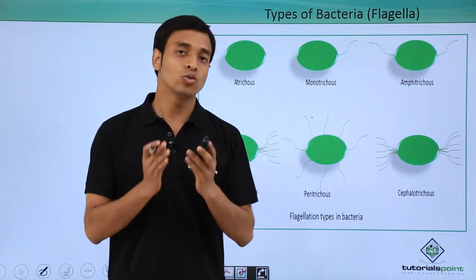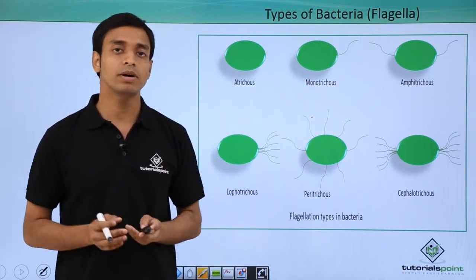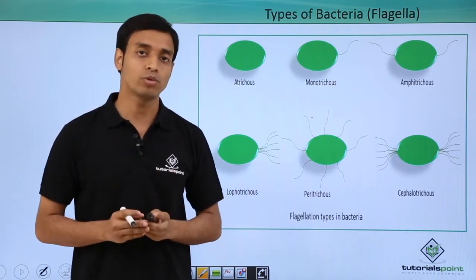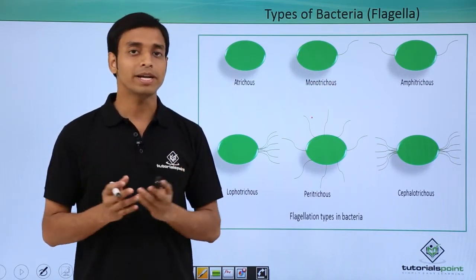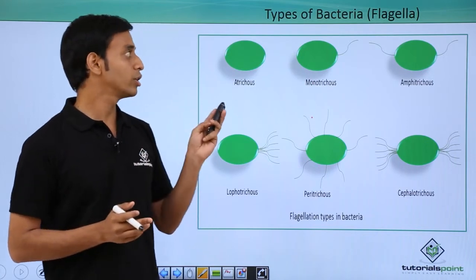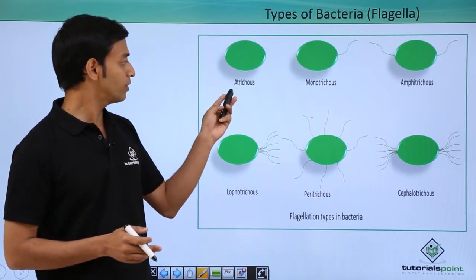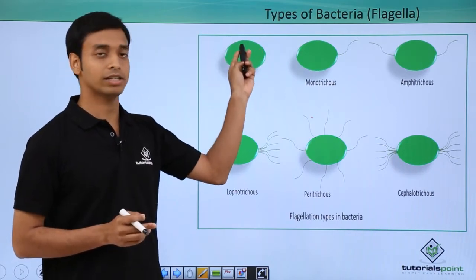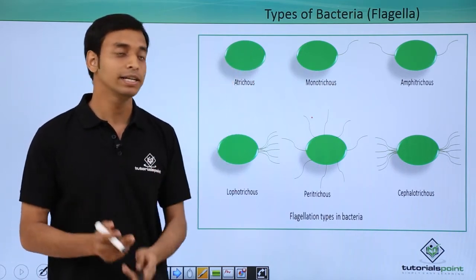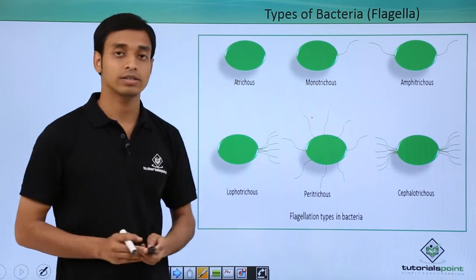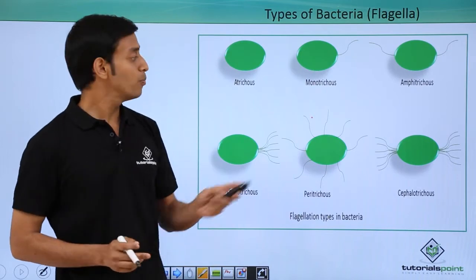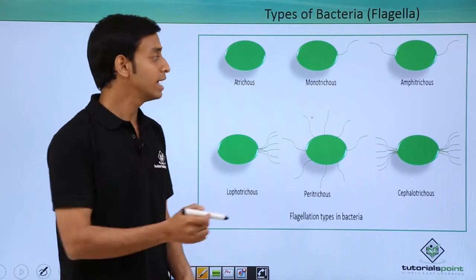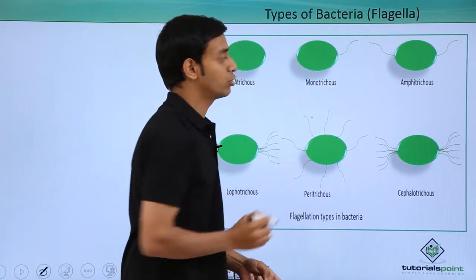Now let's look into the types of bacteria classified on the basis of the presence of flagella. Flagella are whip-like structures made up of flagellin proteins, present on the bacterial cell surface. The first type is atrichous, which means flagella is absent.